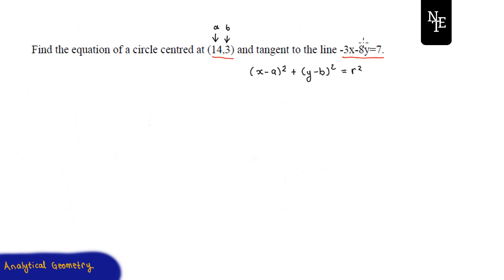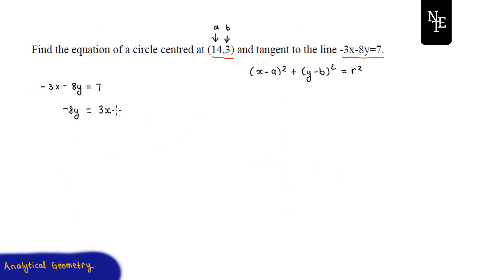Let's start by changing the given equation into slope-intercept form — the form y = mx + c. We are given -3x - 8y = 7 as the equation of our tangent line. Rearranging: -8y = 3x + 7, then dividing both sides by -8 gives us y = -3/8 x - 7/8. So this is the equation of our tangent line.